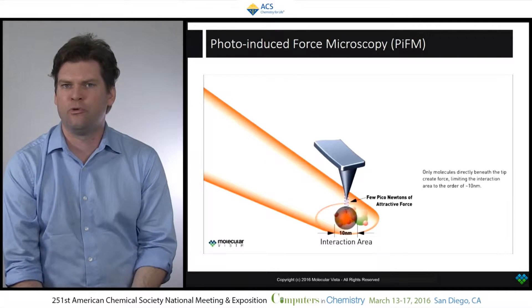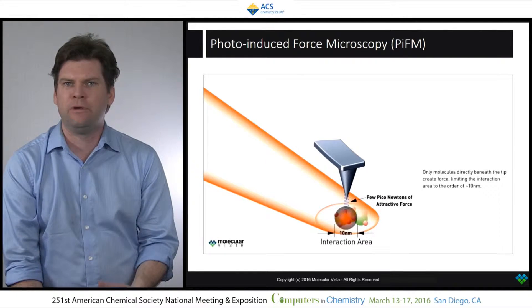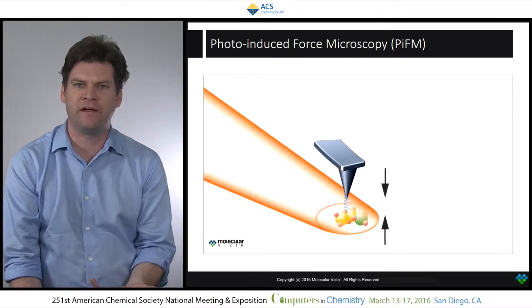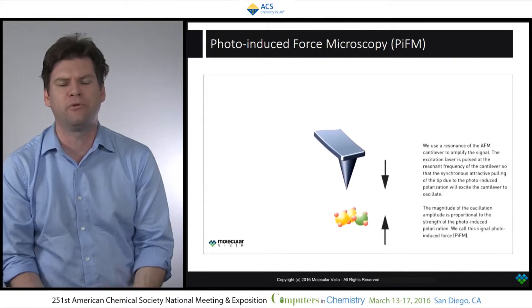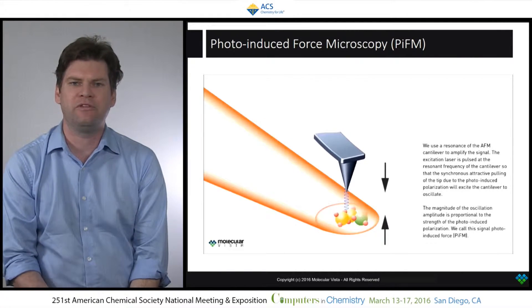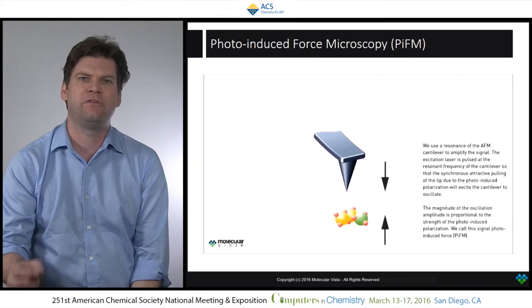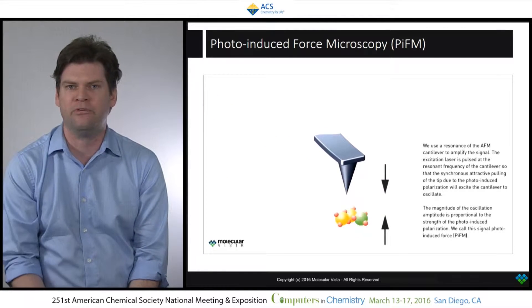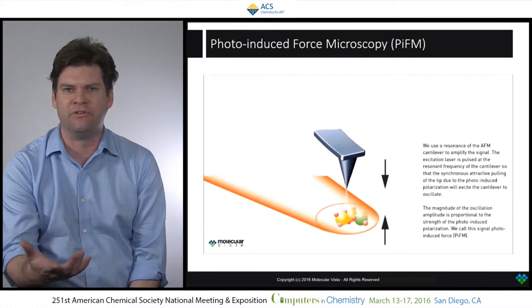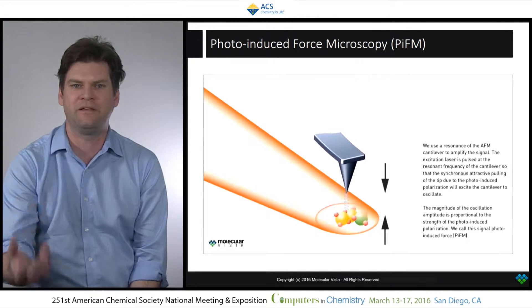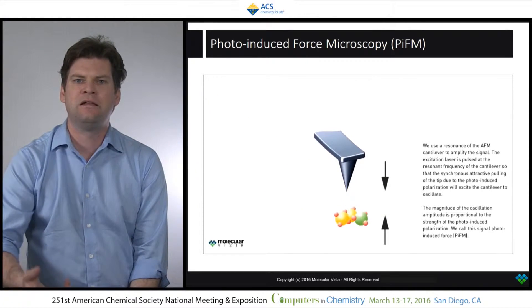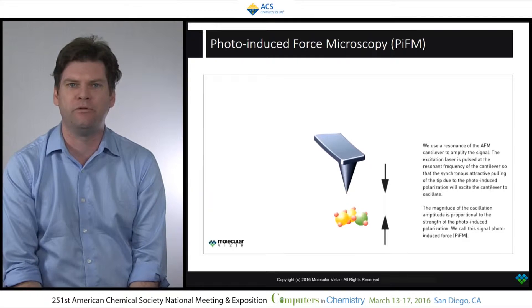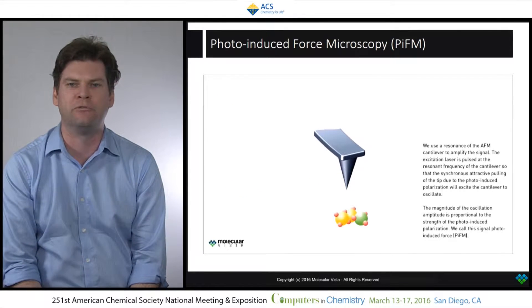Now because this force is so weak, we need a way to stimulate the cantilever to amplify the signal. So what we do is we modulate the laser at a frequency so that we can tap into one of the mechanical resonant modes of the AFM cantilever. That's what you're seeing here — this mode being excited — and then we can amplify that piconewton force into something a little bit more measurable.